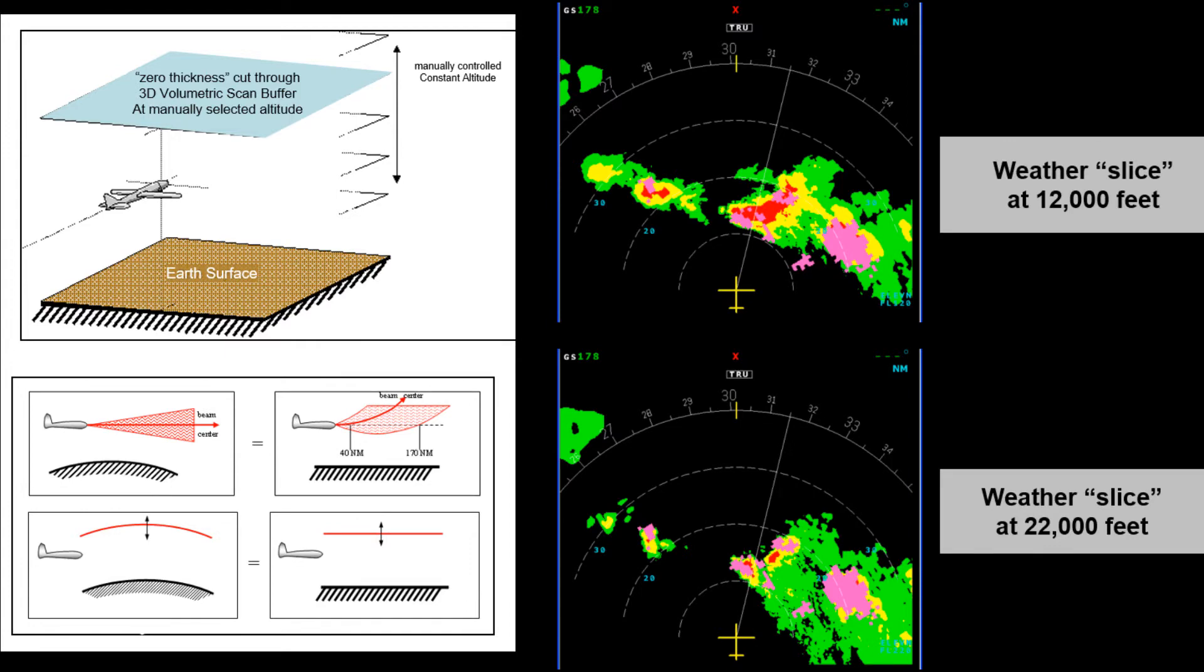These pictures show a very quick and simple analysis. Here, we have the same storm cell with slices extracted at 12,000 feet and 22,000 feet, providing a clear deviation path.